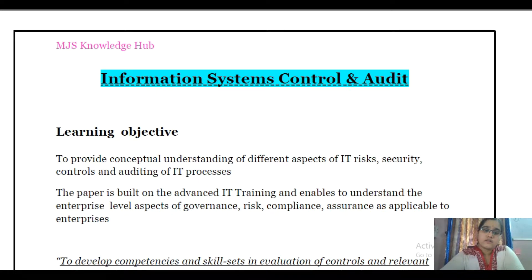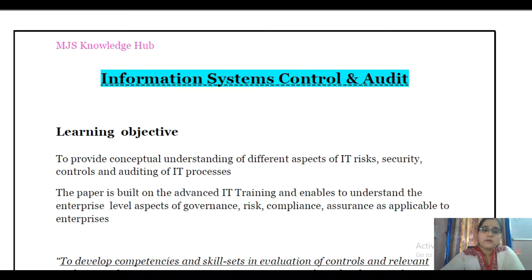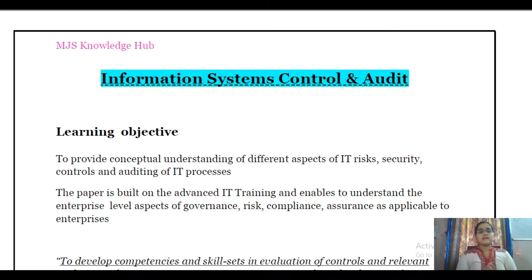As you all know, every purpose or every action has an objective. Similarly, this paper — why the institute has kept this paper — also has an objective. Once we understand the objective, it will be very easy and lighter for us to complete this portion on time. So let us see what are the objectives of the institute for this paper — ICAI paper number 6 of CA Final old syllabus: Information Systems, Control and Audit.